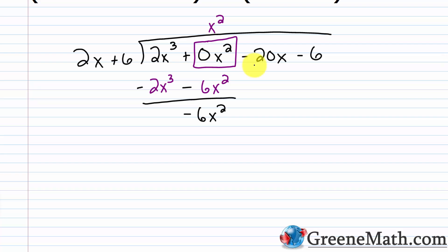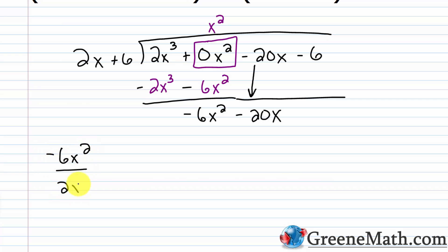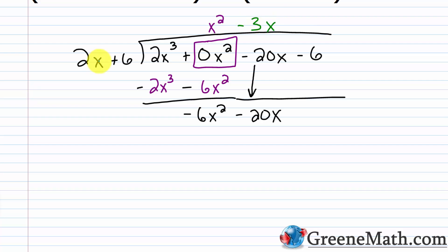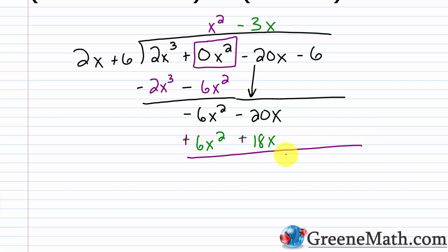0x squared minus 6x squared is negative 6x squared. Now I bring down my next term, which is negative 20x. Going leading term into leading term: negative 6x squared over 2x — the 6 and 2 cancel giving negative 3, and x squared over x gives x to the first power. So I have minus 3x. I multiply: negative 3x times 2x is negative 6x squared, and negative 3x times 6 is negative 18x. I change the signs of each term, making them plus and plus.